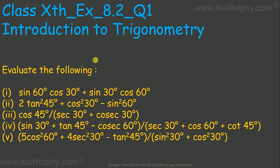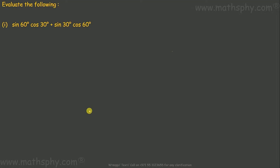We have five equations and we have to evaluate them, find their values. The first one is sine 60 cos 30 plus sine 30 into cos 60. In my previous video I discussed about 45 degrees, 30 degrees, 60 degrees, 0 and 90 — if you remember them, that's very good.